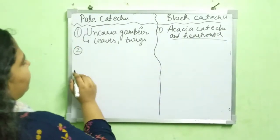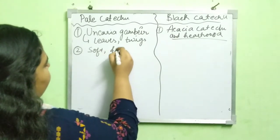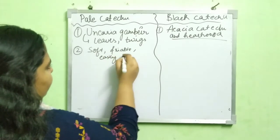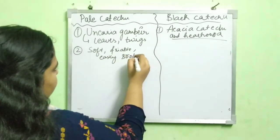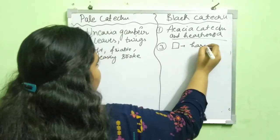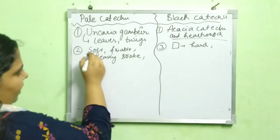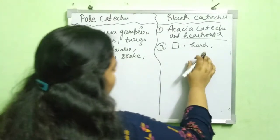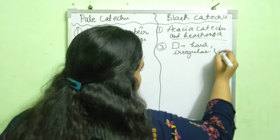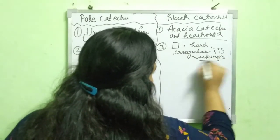The second point is about physical properties. Pale catechu is soft and friable at the bottom — the pieces are easily broken. Black catechu, on the other hand, is hard and not easily broken. It is irregular in shape, with markings and scratches on the surface, which is why it appears rough.